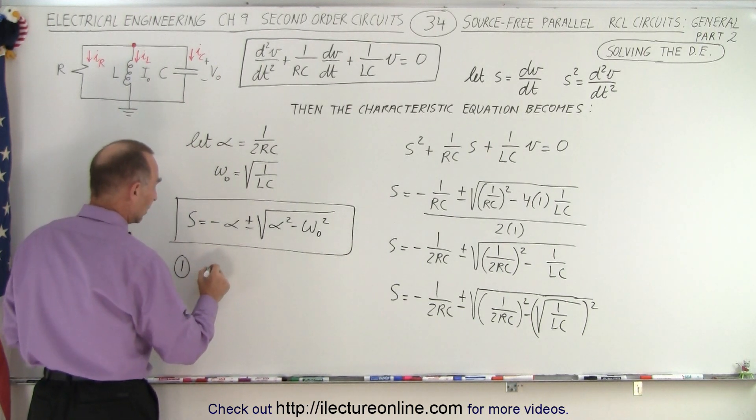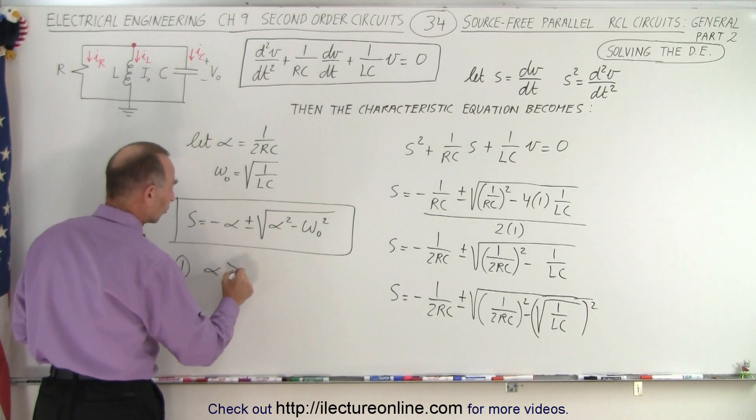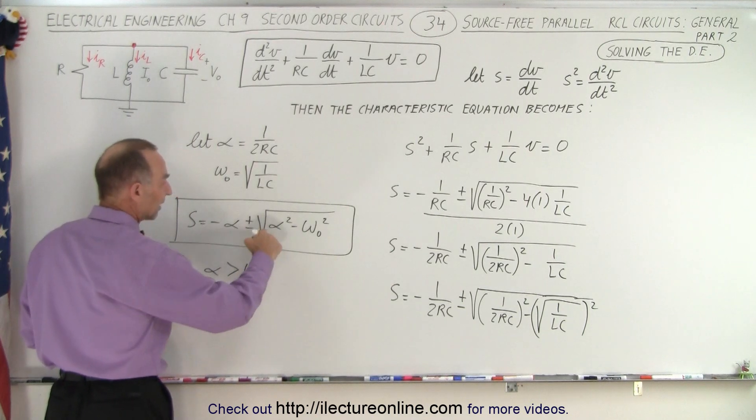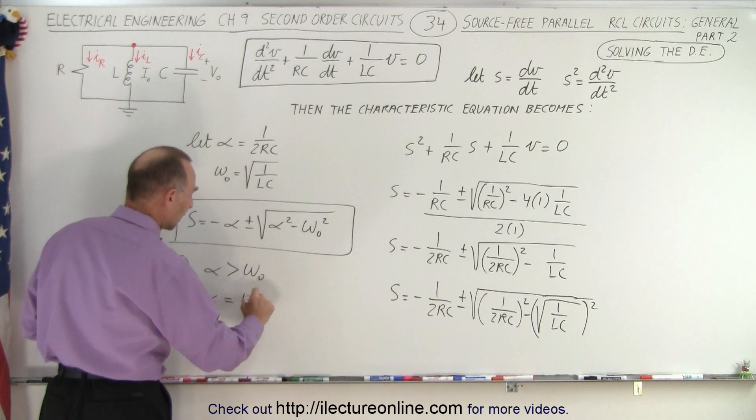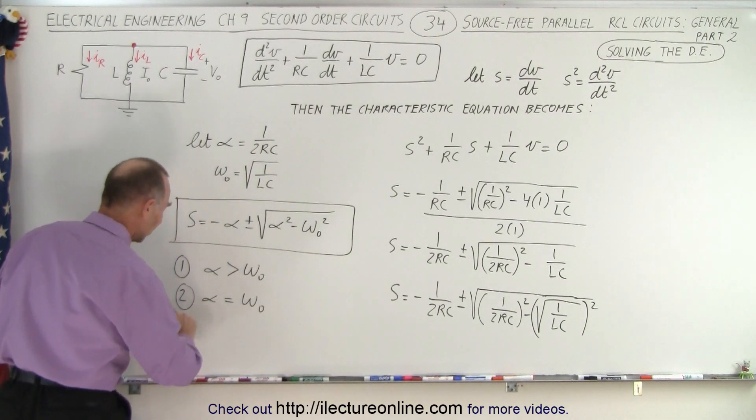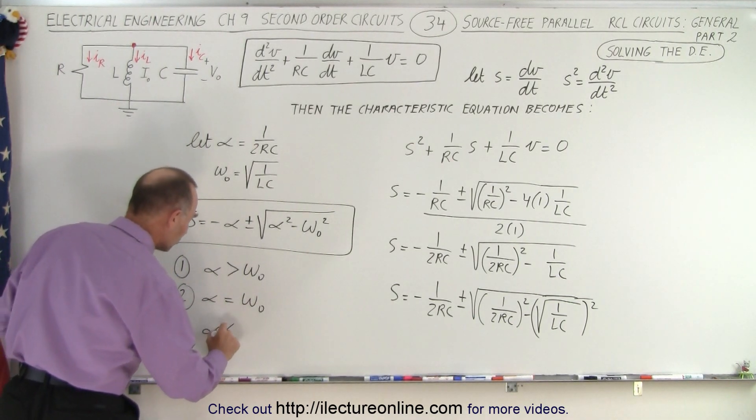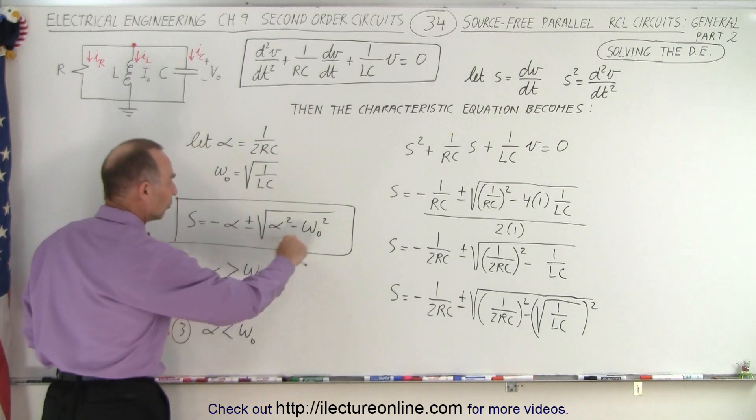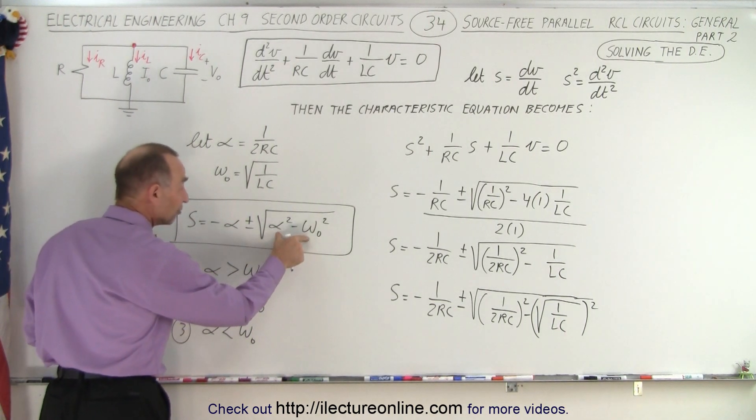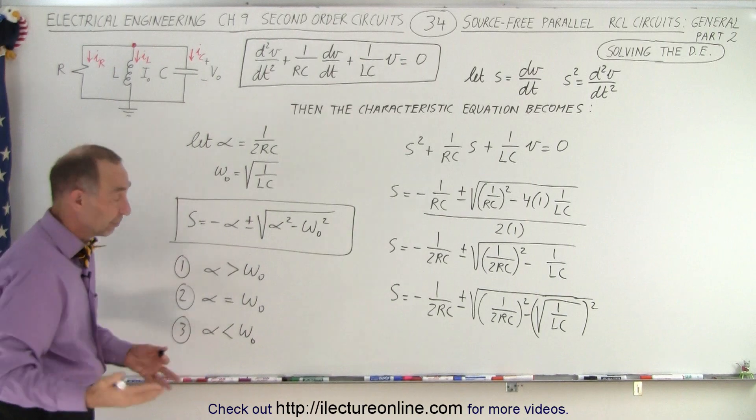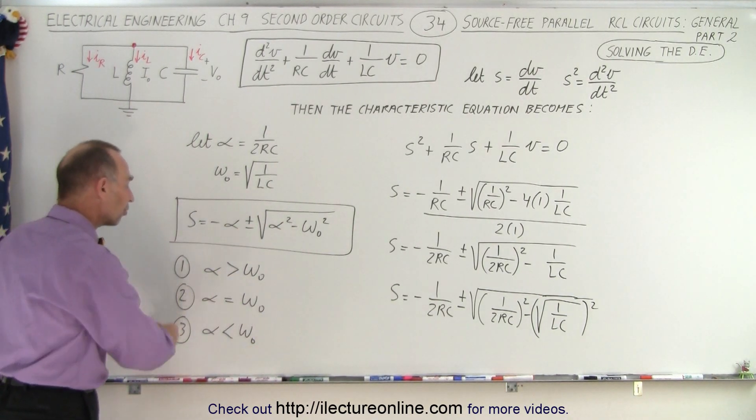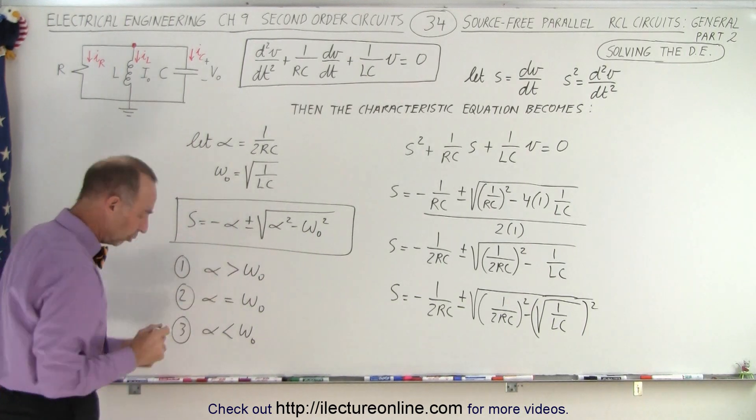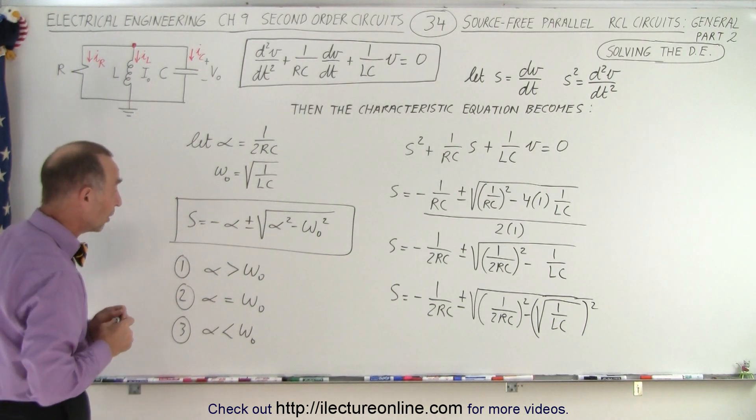Case number one, we will end up with alpha larger than omega sub 0, so that makes this a real quantity. The second case will be where alpha equals omega sub 0, and the third case is when alpha is smaller than omega sub 0, where this will be a negative number. Then we take the square root of a negative number, we get i, and we'll show you what that looks like. So we're going to end up with three possible cases of our general solution of the differential equation.